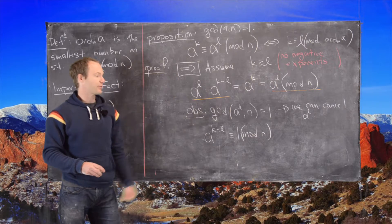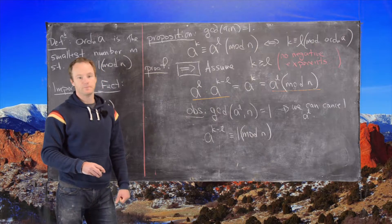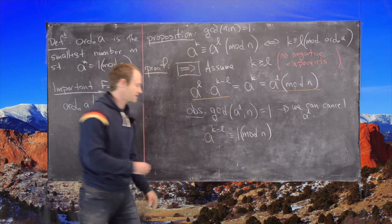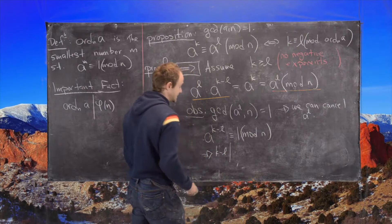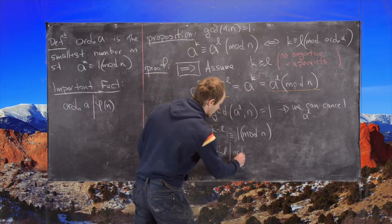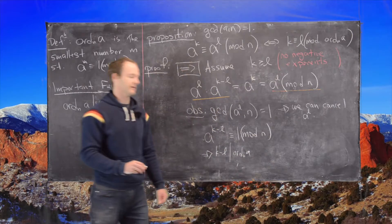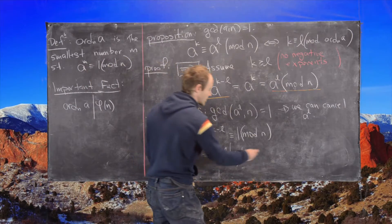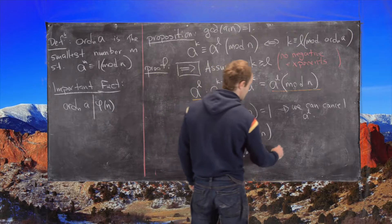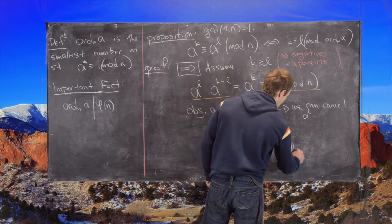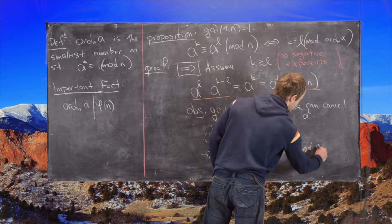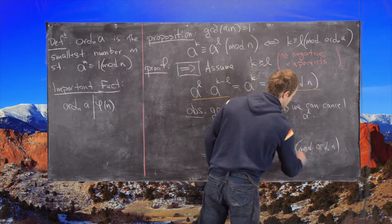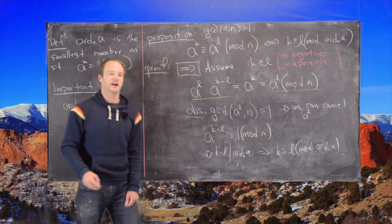But then by a previous proposition, that tells us that k minus l must divide the order modulo n of a. But that brings us exactly to where we want to be, which is k is congruent to l modulo this order, which finishes this direction of the proof.